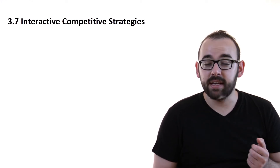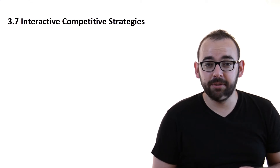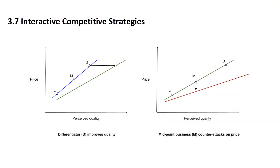We are going to discuss the value line concept. This picture shows different organizations competing by either emphasizing prices or high quality. The graph on the left starts with a first value line describing various trade-offs in terms of price and perceived quality that are accepted by customers. The cost-leading firm L offers relatively poor perceived quality, but customers accept this because of the lower price. While the relative positions on the graph should not be taken exactly literally, in the car market this cost-leading position might describe some Hyundai products.